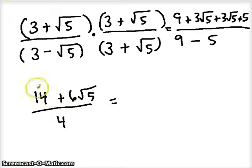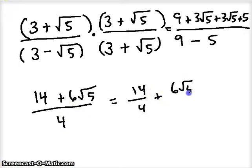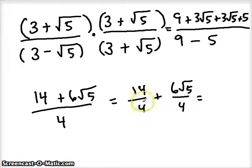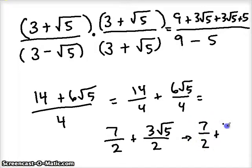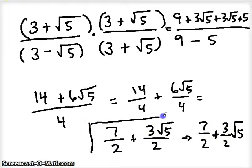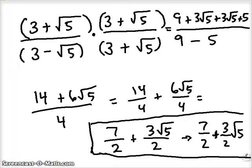Since we have a binomial on top over one number, we can break it into two fractions: 14 over 4 plus 6 times the square root of 5 over 4. That helps us simplify. 14 over 4 reduces to 7 halves, and 6 over 4 reduces to 3 halves, so we get 7 halves plus 3 halves times the square root of 5. We could also write it as 7 halves plus 3 halves with the square root of 5 alongside. Either form is acceptable, but we can't simplify any further — this is our final answer.